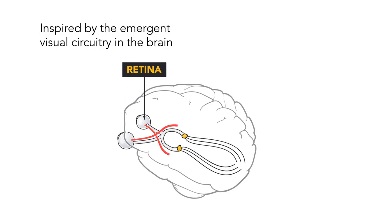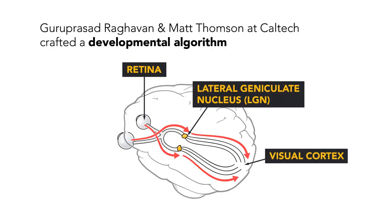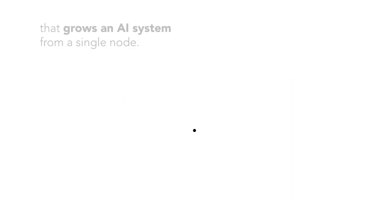Inspired by the emergent visual circuitry in the brain, Guru Prasad Raghavan and Matt Thompson at Caltech crafted a developmental algorithm that grows an AI system from a single node.